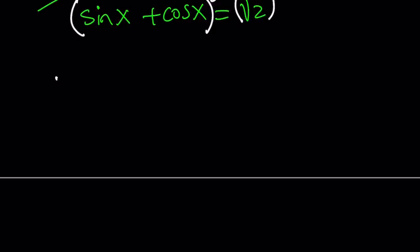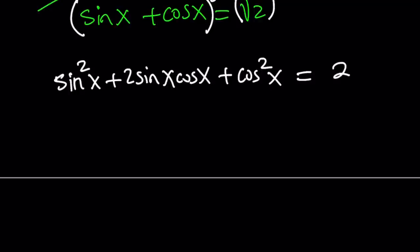Square both sides. When we square both sides we get sine squared x plus 2 sine x cosine x plus cosine squared x equals 2. Now remember one of the most important identities is sine squared plus cosine squared equals 1. So this is 1 plus, and what does that look like? If you study double angles in trigonometry this is sine of 2x and this is equal to 2.